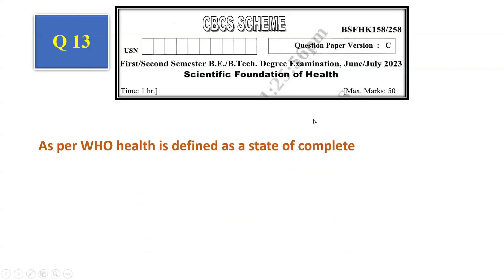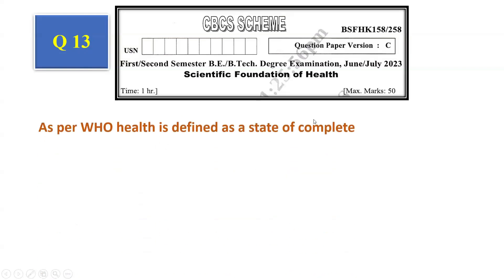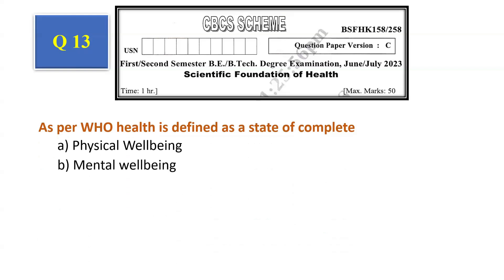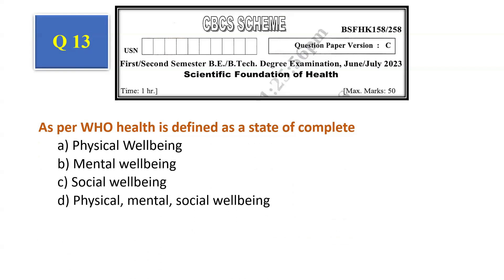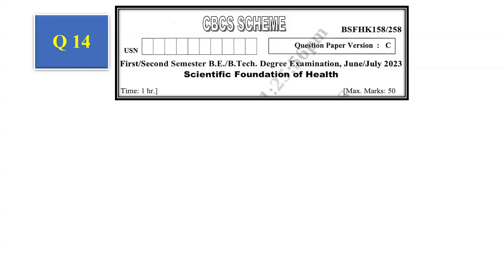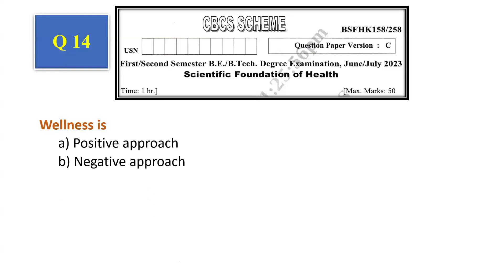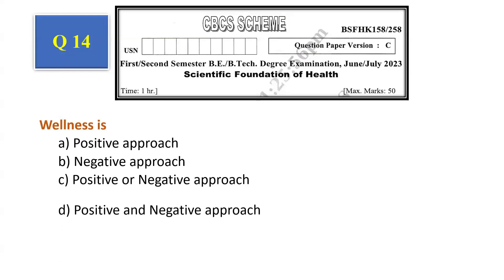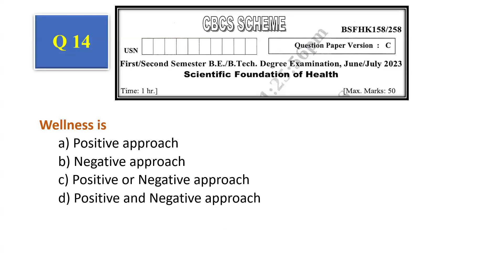Question number 13: As per WHO, health is defined as a state of complete physical well-being, mental well-being, social well-being, or physical, mental, and social well-being. The answer is option D — physical, mental, and social well-being. Question number 14: Wellness is — positive approach, negative approach, positive or negative approach, positive and negative approach. The answer is positive or negative approach, that is option C.